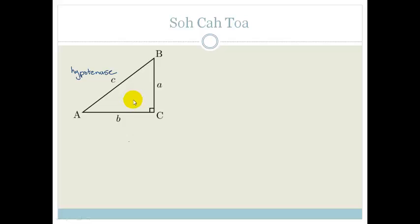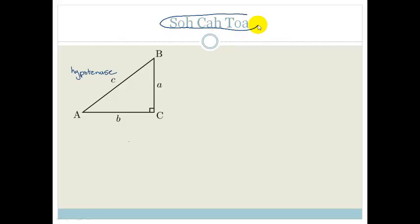Then you need to decide on an angle. We are going to be using this thing here called SOHCAHTOA. Another phrase that you may have heard is 'Silly old hen, cackle and howl till old age.'